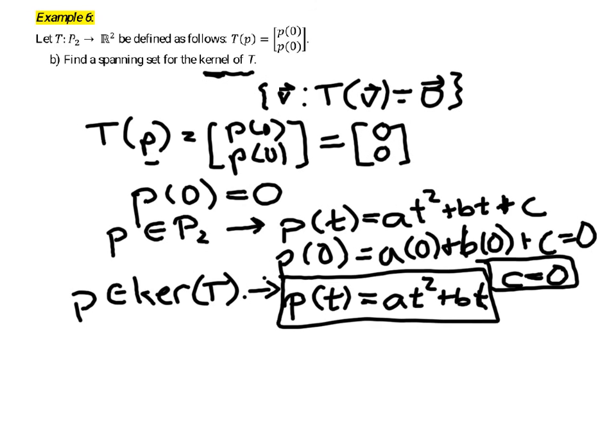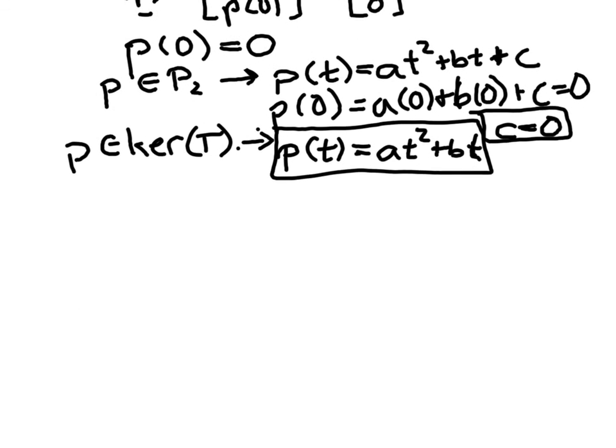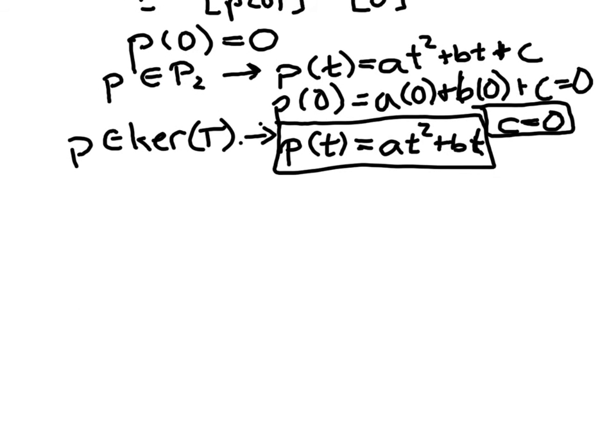All right, but we are asked to find a spanning set for the kernel. So we need a specific set of vectors so that any polynomial in the kernel—so any vector of this form—is a linear combination of those vectors. Well, the thing that maybe immediately comes to mind here is we basically have this thing expressed as a linear combination...